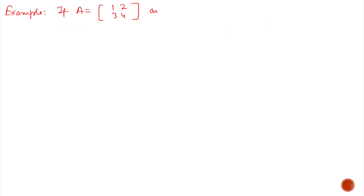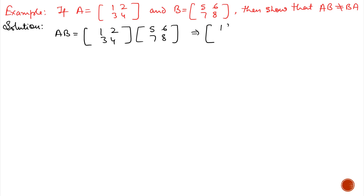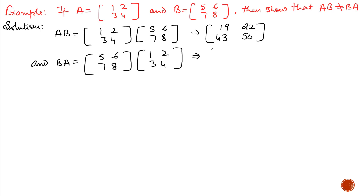Can we say AB equals BA? Let's check. Example: if A is 1, 2, 3, 4 and B is 5, 6, 7, 8, show that AB ≠ BA. Calculating AB gives 19, 22, 43, 50. Calculating BA gives 23, 34, 31, 46. Since these two results are different, we can confirm that AB is not equal to BA.